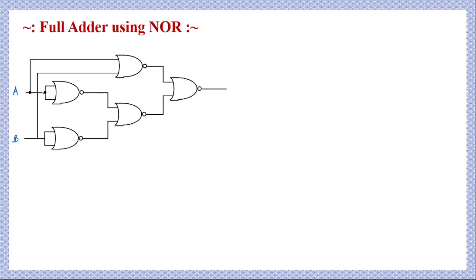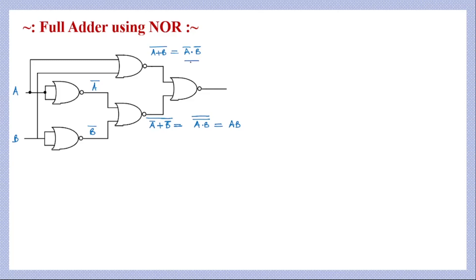In this stage, a NOR gate with both inputs as A gives A-bar (A complement). Similarly, another NOR gate gives B-bar. A third NOR gate takes A and B as inputs, giving (A+B)-bar, which by De Morgan's law equals A-bar·B-bar. A fourth NOR gate takes A-bar and B-bar as inputs, giving (A-bar + B-bar)-bar, which simplifies to A·B.